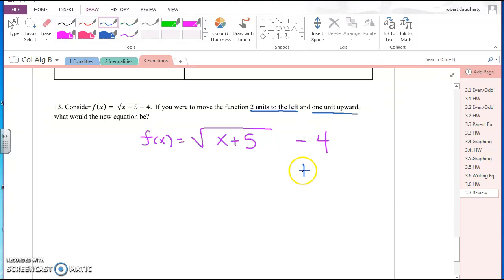Okay, so if I move a graph up, that's just going to be plus 1. And if I'm moving it 2 units to the left, that's just going to be a plus 2.